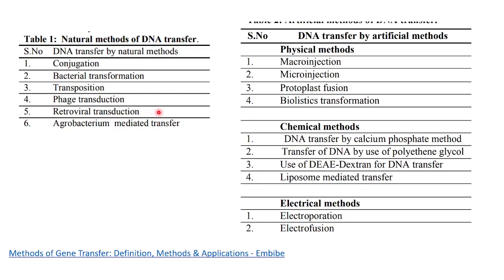Retroviral transduction involves retroviruses — a kind of virus where RNA is the genetic material. They transfer RNA and the RNA produces DNA, which is why it is called a retrovirus. Agrobacterium tumefaciens bacteria infect plant cells and transfer their DNA — normally they cause tumors in plant cells. Like this, DNA transfer methods already exist in nature in these forms, and in genetic engineering and recombinant DNA technology, some artificial methods have been developed by researchers.